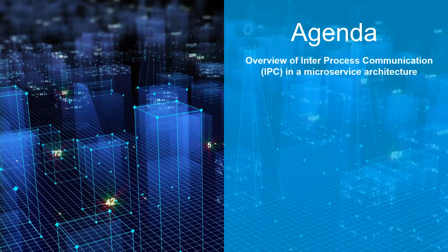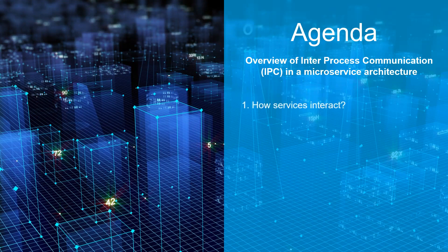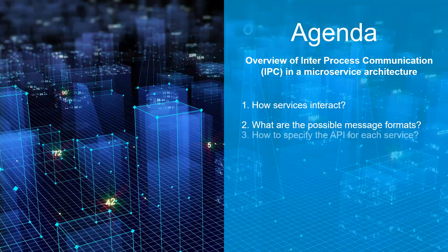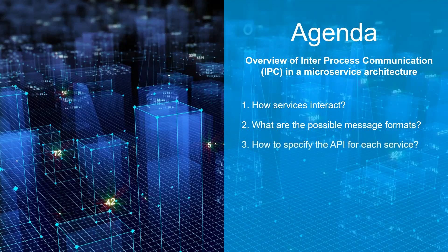In this presentation I will focus on giving an overview of IPC mechanisms in a microservice architecture. I will begin by showing how services can interact, then talk about the possible message formats exchanged when two or more services communicate. After that, I will show how to specify an API for a service, in addition to how to manage these APIs when they evolve over time.